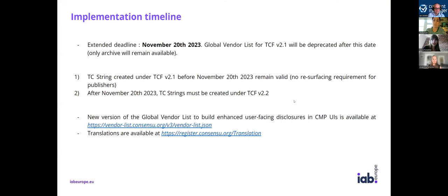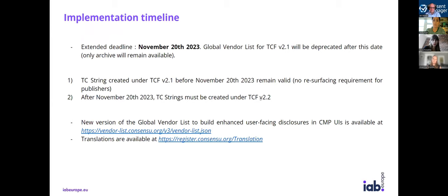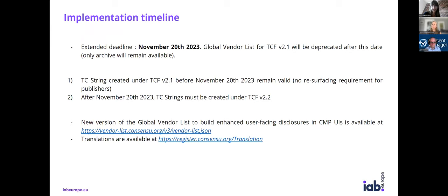We have decided to extend the deadline to implement the TCF version 2.2 changes, as a result of feedback from the market that TCF participants needed more time. Please note that after the new deadline, TC strings created under TCF version 2.1 are still valid, but it won't be possible to create new TC strings under version 2.1 after that date. All new TC strings must be created under version 2.2. There is also a new global vendor list available, as well as translations to improve your current CMP UIs.